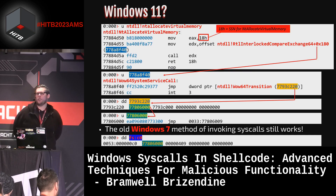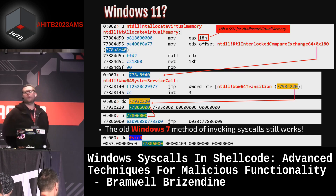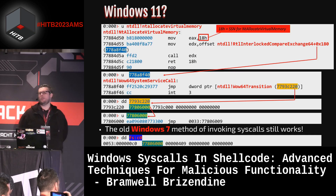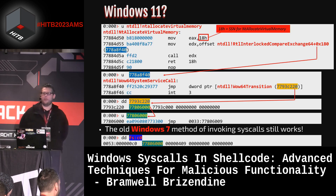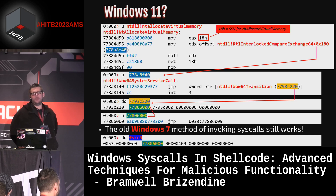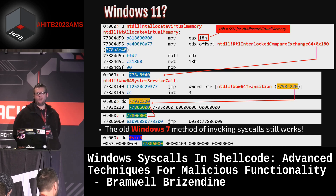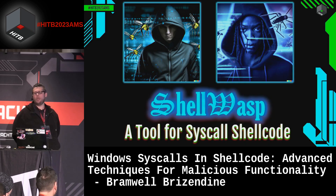On Windows 11, some function names are slightly different, but we still maintain EAX hex 0x18 for NT Allocate Virtual Memory. From our perspective it is mostly identical to Windows 10, and FS:[0xC0] is still there — so we can probably use that for shellcode purposes.